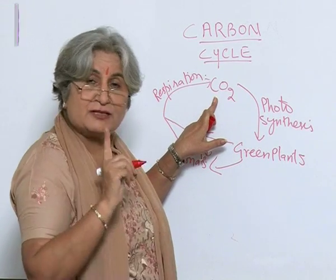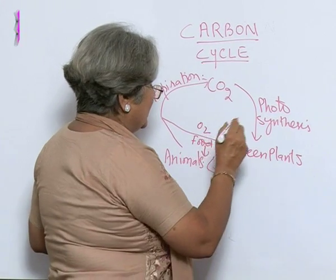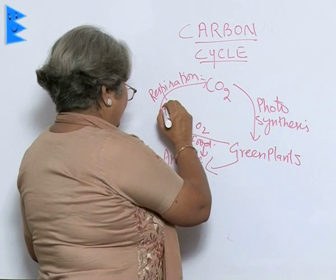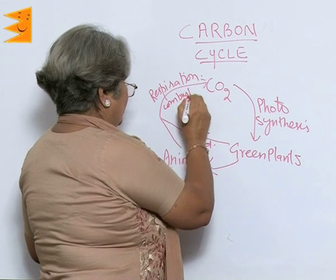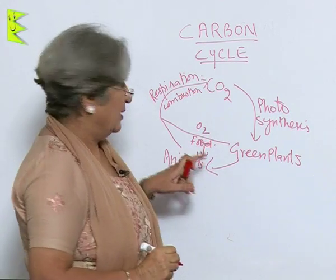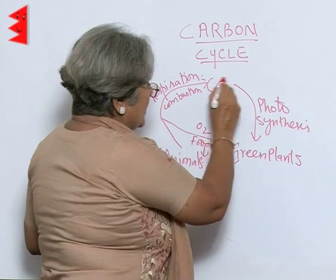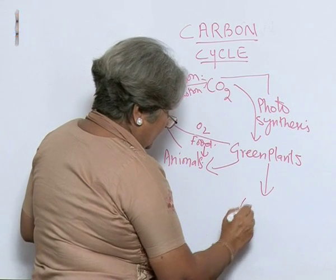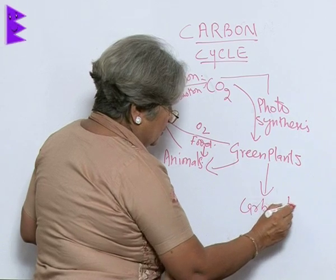There is one more process for which oxygen is needed, and that is combustion. Oxygen is also needed for combustion, and some of the carbon dioxide is used to make carbonates which go to the sea.